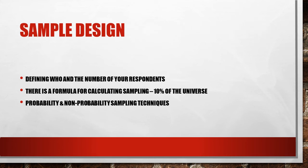The next step is defining the sample — the number of respondents in the research study if it is a primary study. This includes defining the demography or profile of the people: male or female, age group, education level, income level, depending on relevance to the study. There is a formula for calculating the sampling — generally 10% of the universal individuals relevant to the study. There are two kinds of techniques: probability and non-probability sampling. These must be defined before data collection begins.